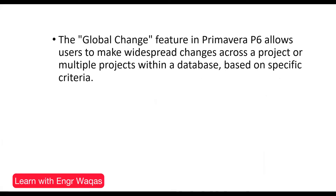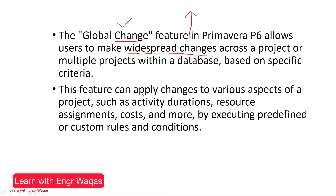Global Change is a big feature in Primavera P6. It allows users to make widespread changes across a project or multiple projects within a database. When you hear 'Global Change,' the key word is 'change' — it is going to change something in your database. The feature can apply changes to various aspects of a project such as activity duration, resource assignment, cost, and more.